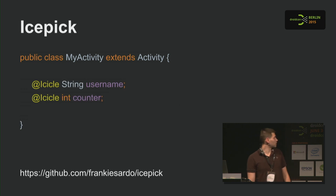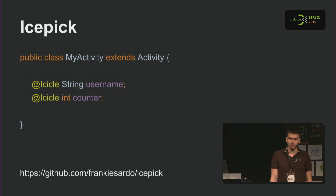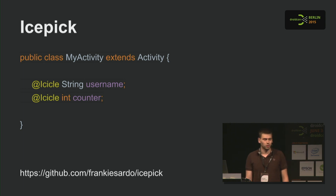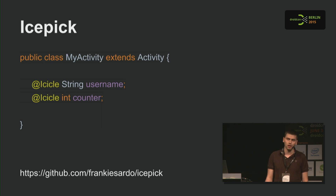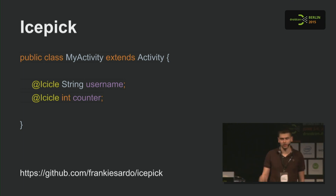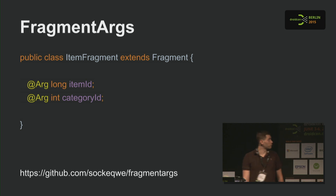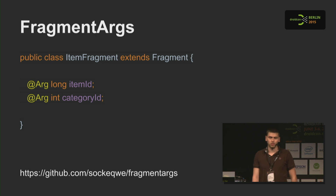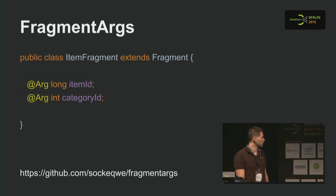There's something similar for saving instance states. Instead of putting all your data by hand into the bundle, all you have to do is annotate it with @Icicle, and it also works seamlessly for pulling the data back out of the bundle. Pretty much the same for fragment arguments — instead of writing your own bundle, you can use annotations.